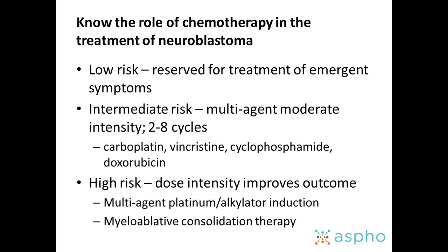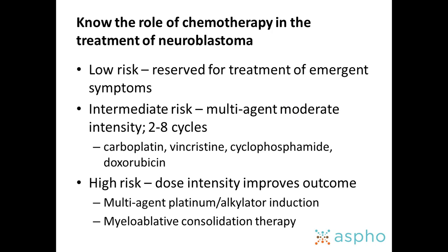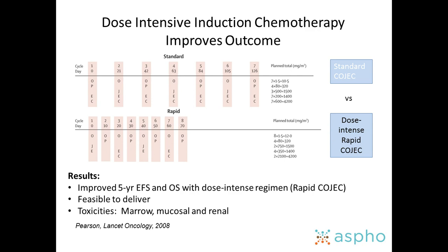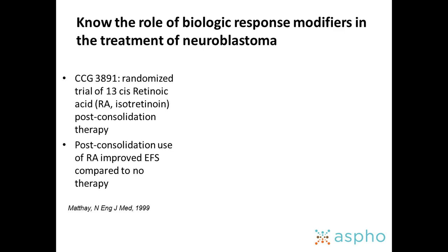Chemotherapy is reserved for emergent symptoms in low-risk disease. Moderate doses — usually carboplatin, vincristine, cyclophosphamide, and doxorubicin — are used in intermediate-risk disease. Multi-agent high-dose chemotherapy is used for high-risk disease, and studies have shown that intensity improves outcome for high-risk neuroblastoma.